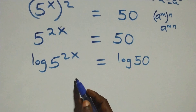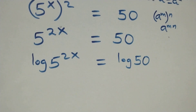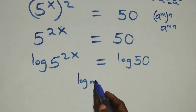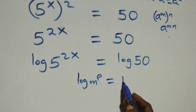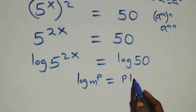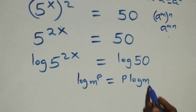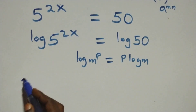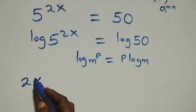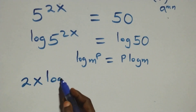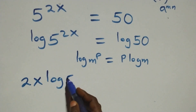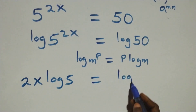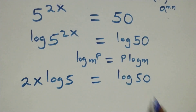Here we apply the power rule of logarithm: when we have log n raised to power p, this is the same thing as p times log n. Applying that here, we get 2x log 5 equals log 50.